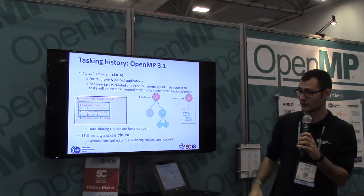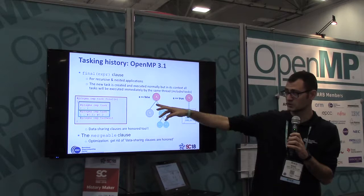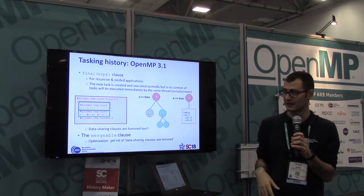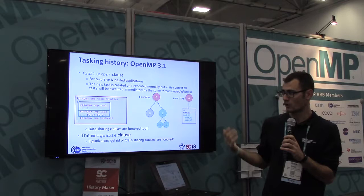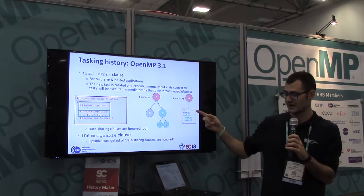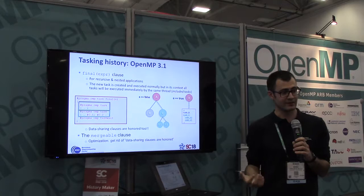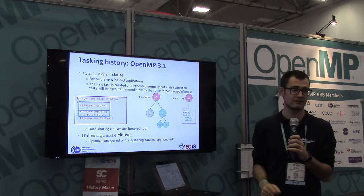In this example we have three nested tasks: a red one containing a blue one and a green one, and inside green are C1 and C2. If the final expression is false, we execute the graph normally — A creates B and C, C creates C1 and C2. If the final expression is true, we create A normally, but a well-optimized OpenMP implementation can execute the code of each inner task directly, removing any OpenMP-related overhead. Data sharing clauses are still honored — a firstprivate in the blue task must be reflected even in sequential execution.